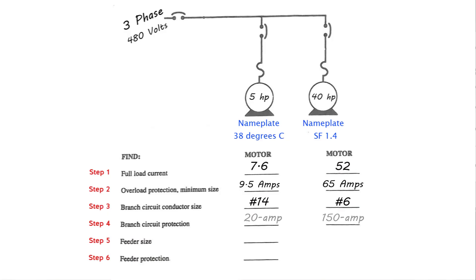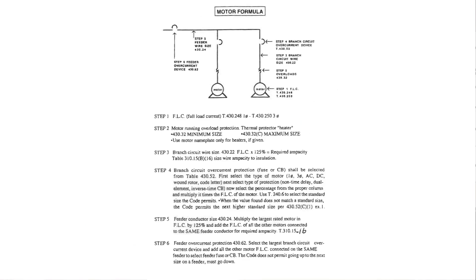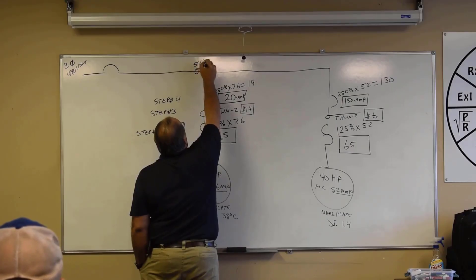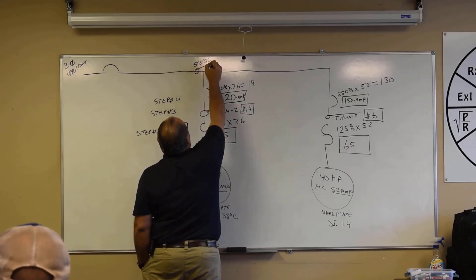Okay, step number four is taken care of. Now we're taking care of all our branch information, right? Branches taken care of. Step number five talks about a feeder. Now the reason why we got two branches here, they're connected to a feeder.